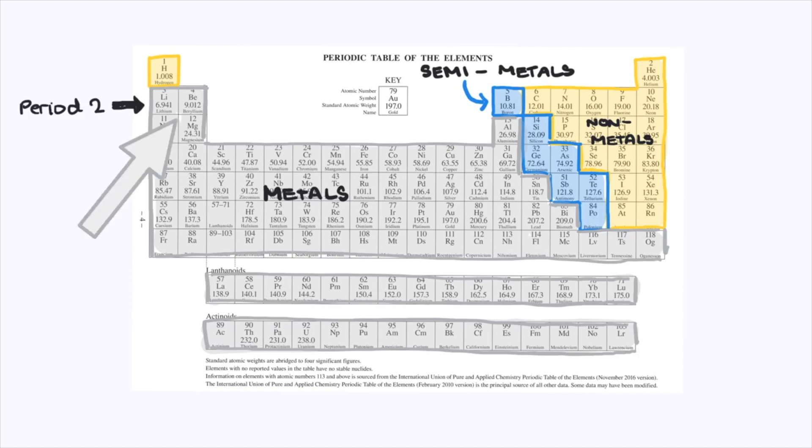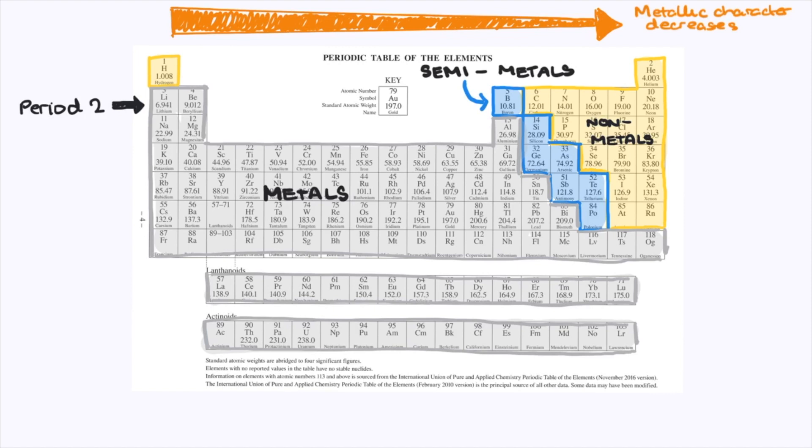lithium and beryllium are metals, but boron is a semi-metal, and the rest of them are all non-metals. So going from left to right, metallic character decreases.